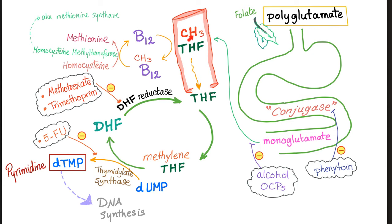B12 passes the methyl group to homocysteine. Homocysteine plus methyl group equals methionine. Then THF is free — free to build up DNA. THF converts into methylene THF.